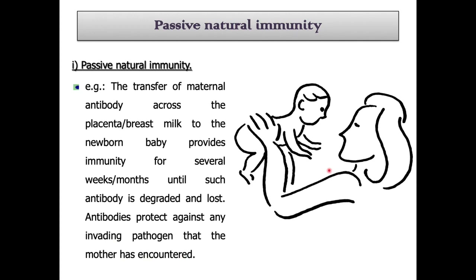A newborn baby's immune system is still developing, so thanks to mothers, antibodies can be transferred to the newborn — either across the placenta as IgG immunoglobulin, or through breast milk. This temporary antibody provides short-term protection to the newborn before the baby can develop its own immune system.